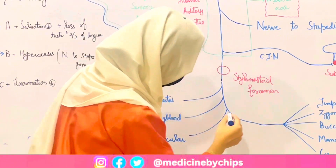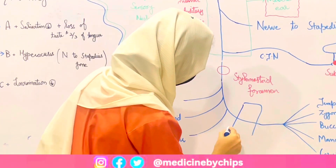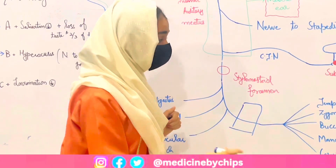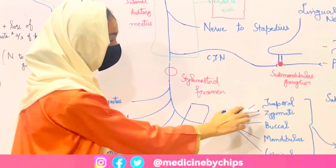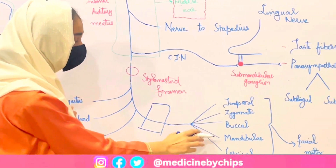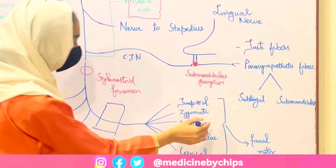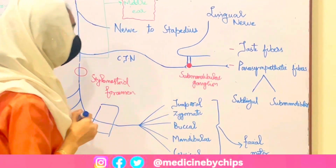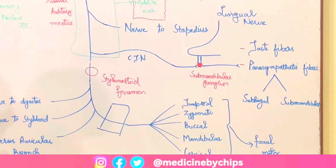After the nerve enters the parotid gland and then leaves it, it gives rise to five branches that supply the facial muscles: temporal, zygomatic, buccal, marginal mandibular, and cervical. These supply the facial muscles responsible for facial expressions.